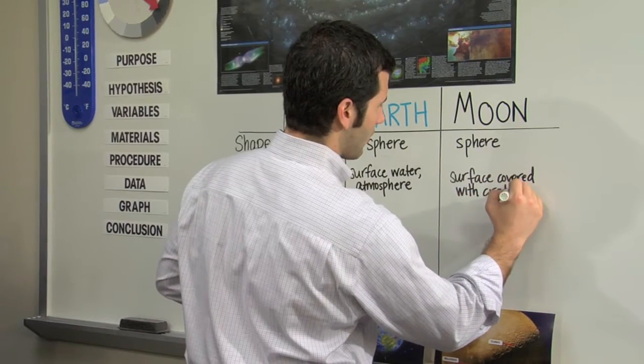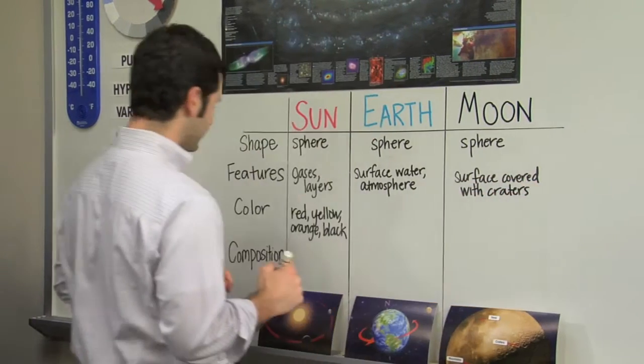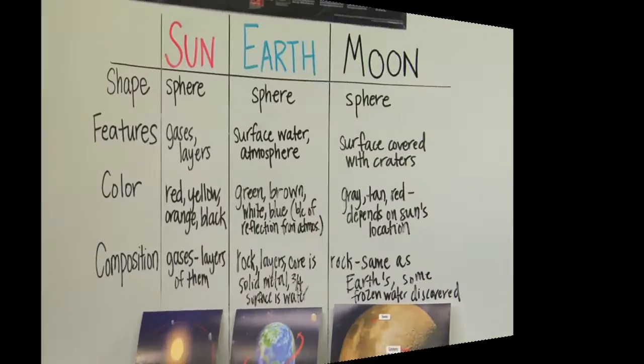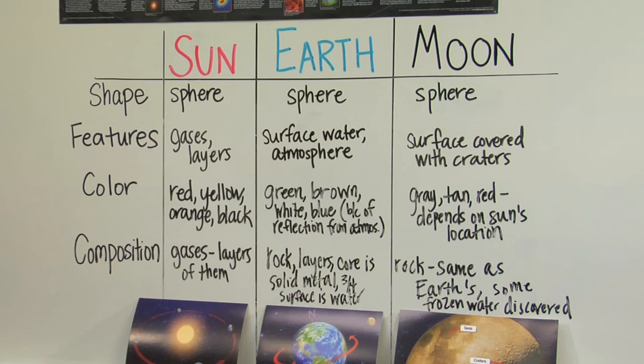Brainstorm with your class to define categories of physical characteristics that describe each of the three celestial objects. Use simple examples such as color and shape, or more complex like features and composition. To verify accurate data, students can compare their lists with each other and with the teacher.